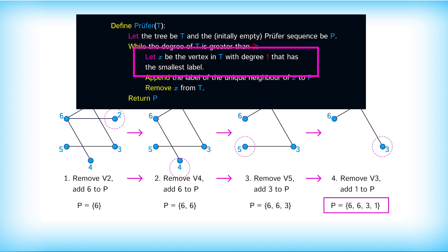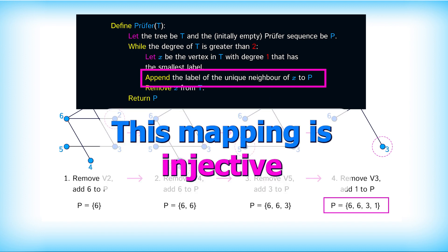At each step, the vertex with degree 1 with the smallest label must be unique. And the neighbor of this vertex must be unique because it was a leaf, a vertex with degree 1. This uniqueness means that the function mapping trees to proof of sequence is injective, meaning that no two trees output the same proof of sequence.